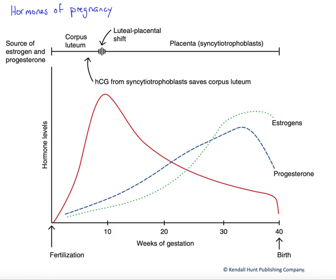In this graph, we'll look at the hormones of pregnancy and some of their main actions. We're going to graph the hormone levels on our y-axis here relative to the period during gestation, during pregnancy, on our x-axis.